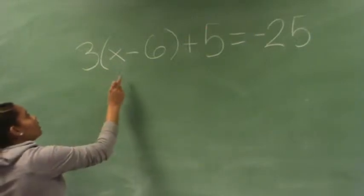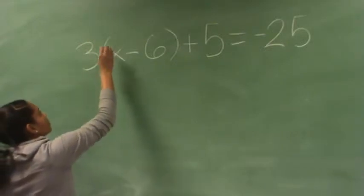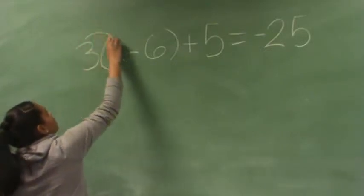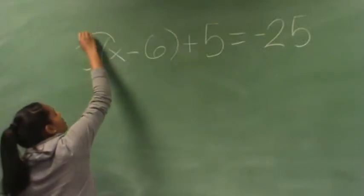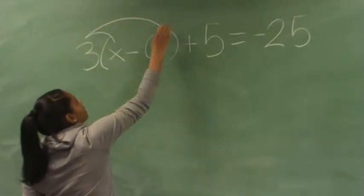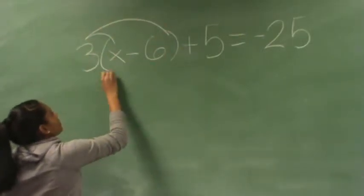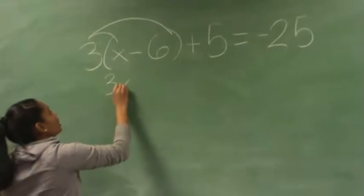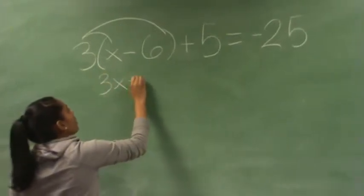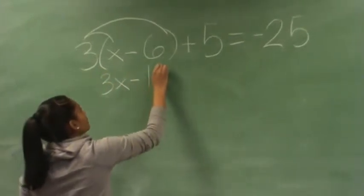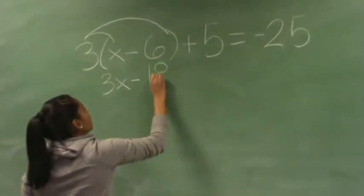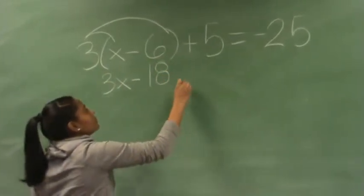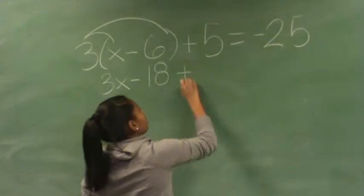So, you distribute the 3 to the x and the 6, which gives you 3x minus 18, and you bring down everything.